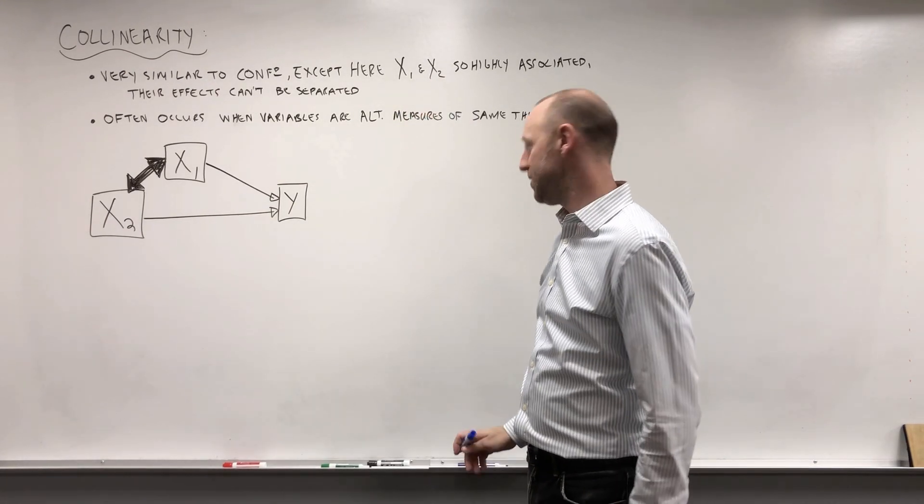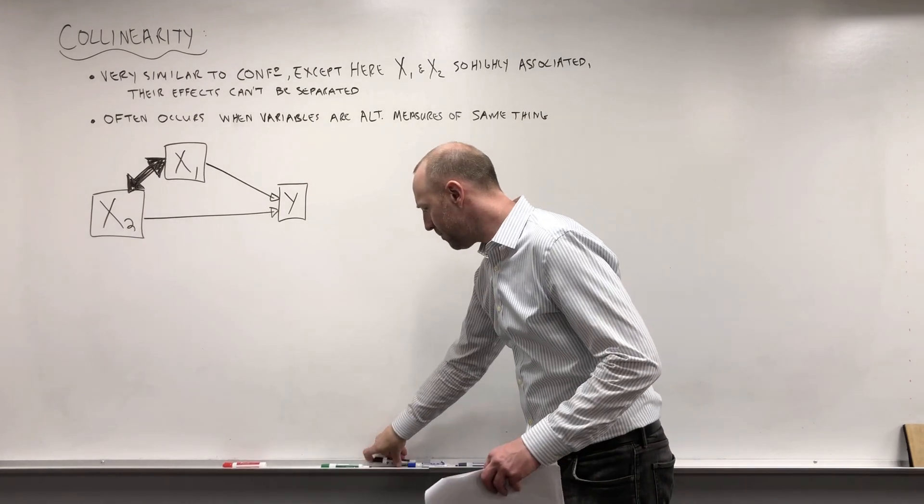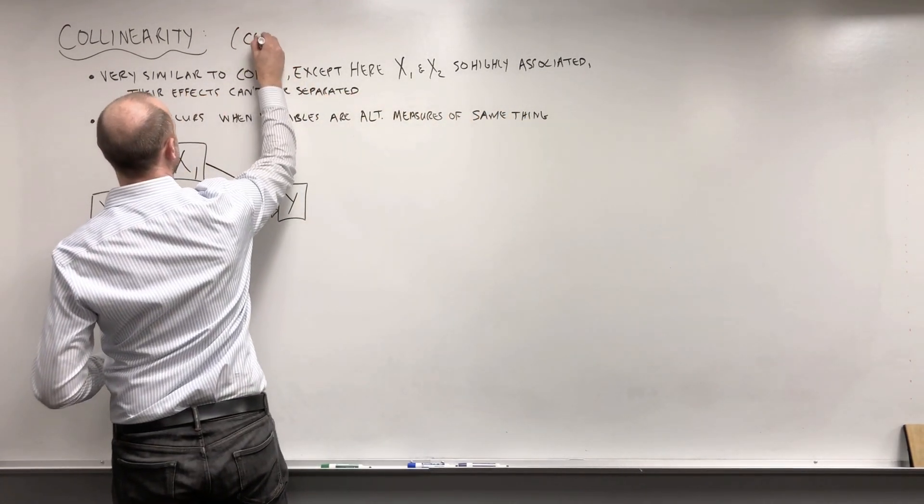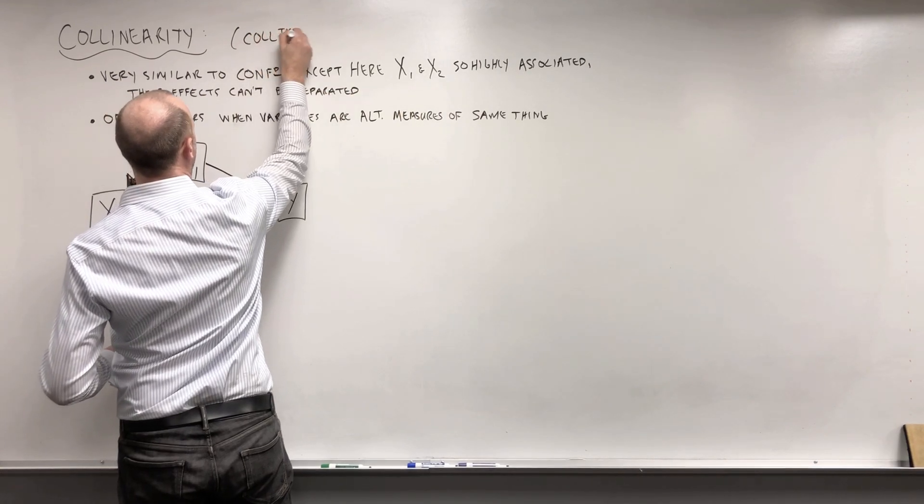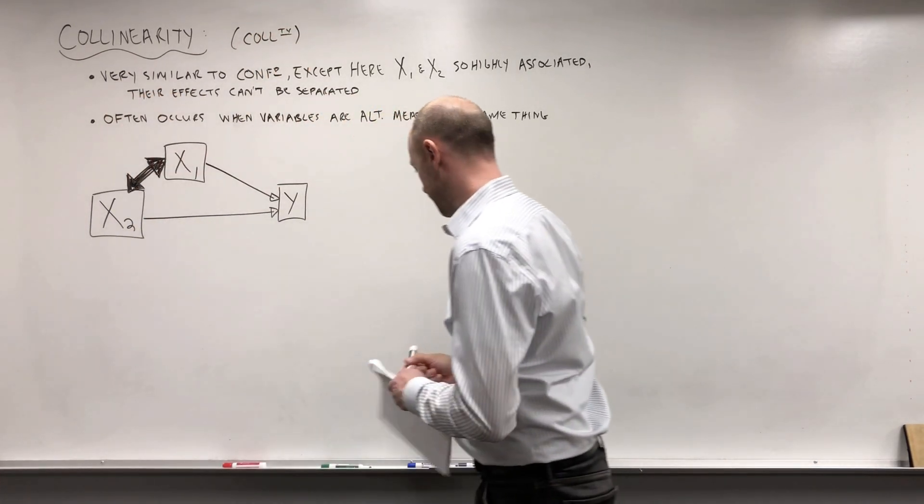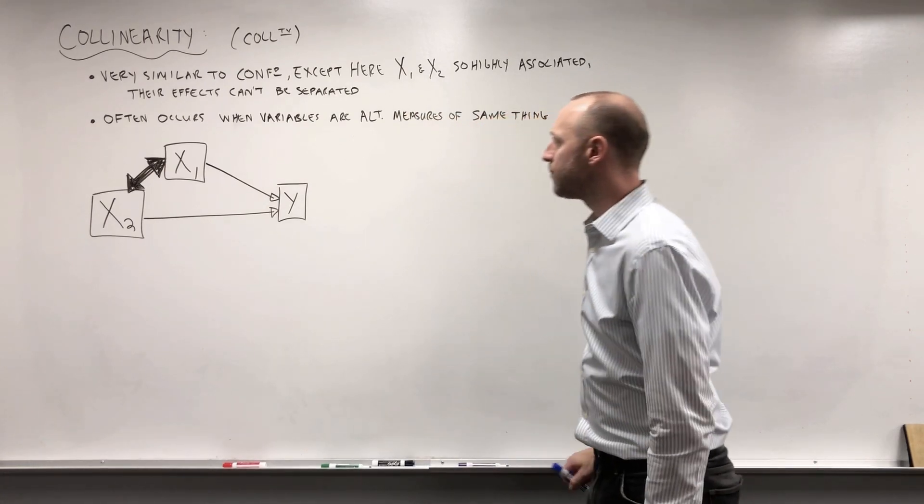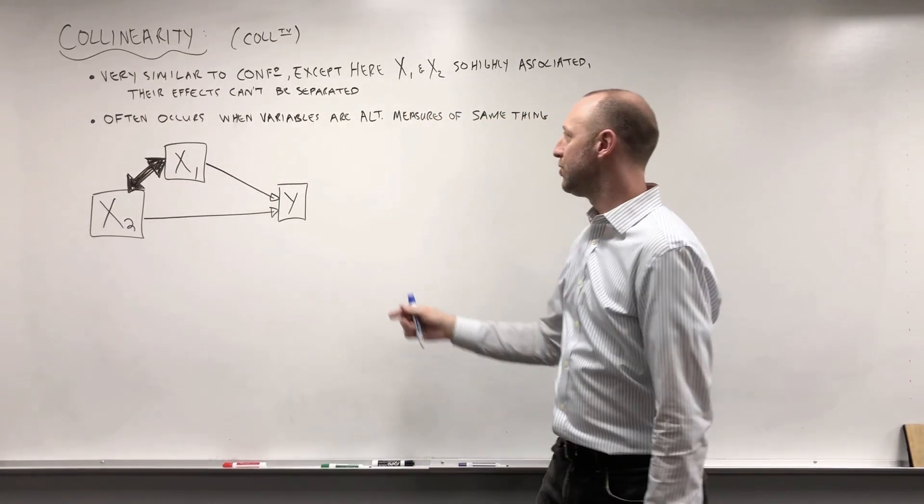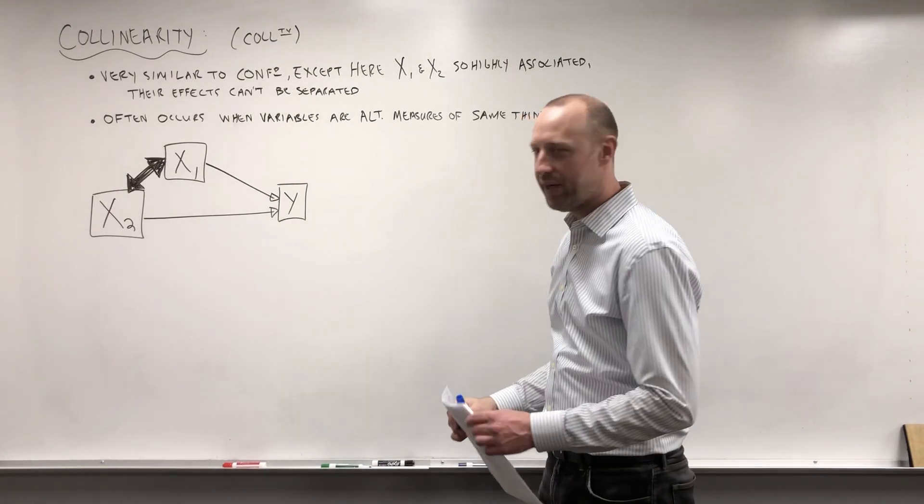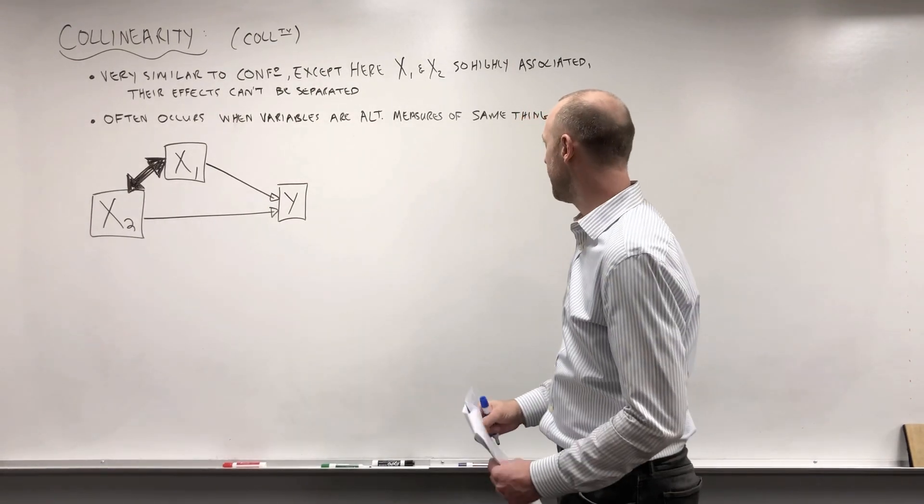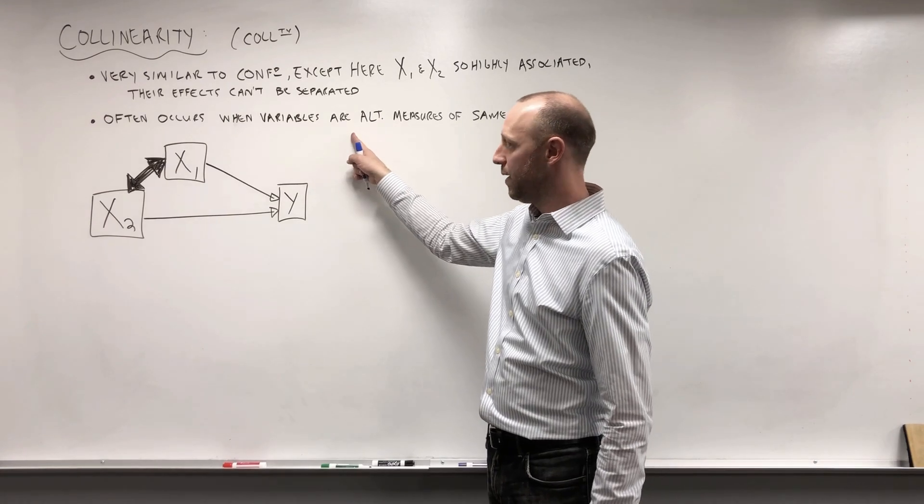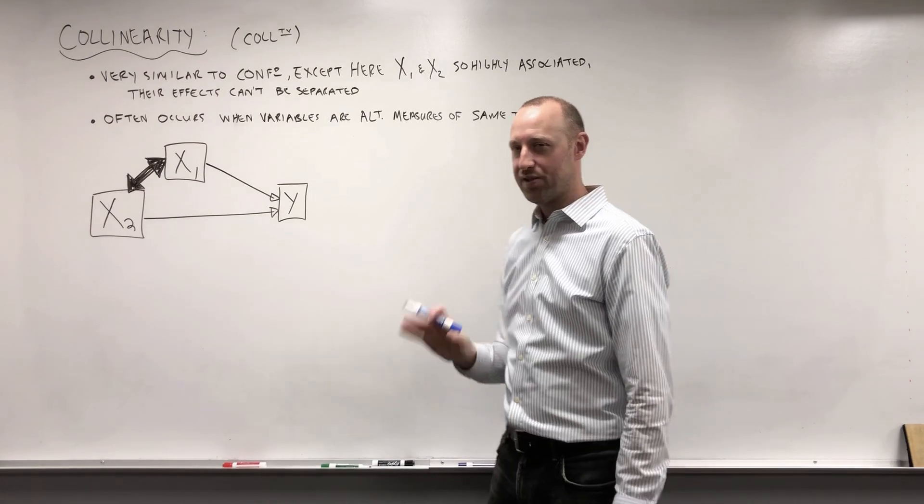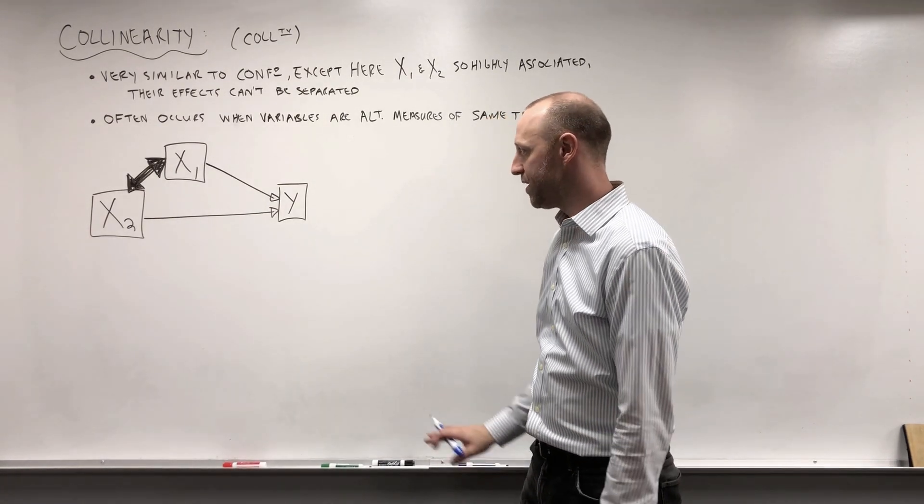I'm going to use the shorthand C-O-L-L-T-Y for collinearity. This usually happens when the association between two variables is so high, or they're essentially alternate measures of the same thing, capturing the same information.